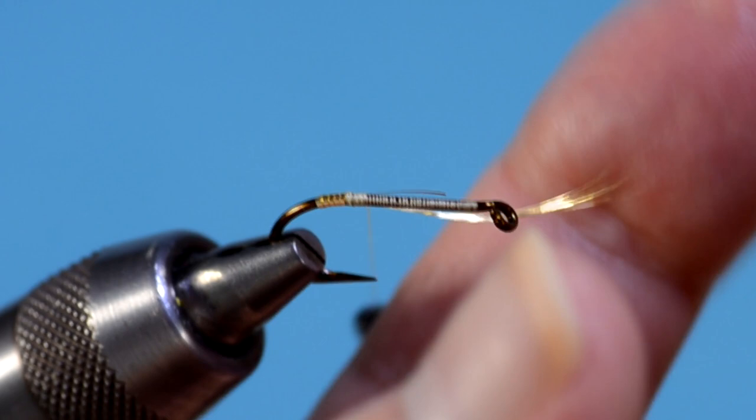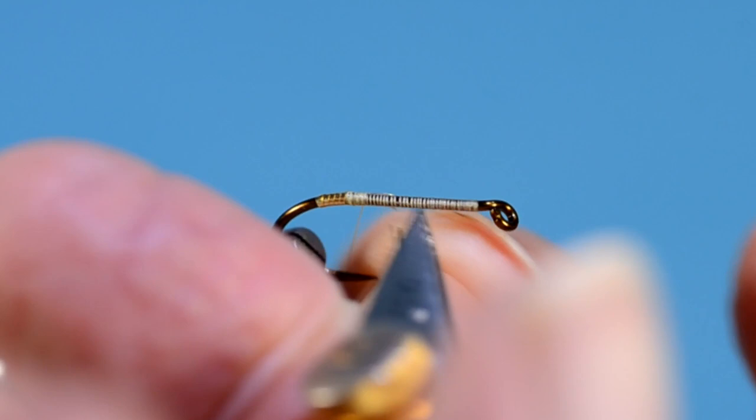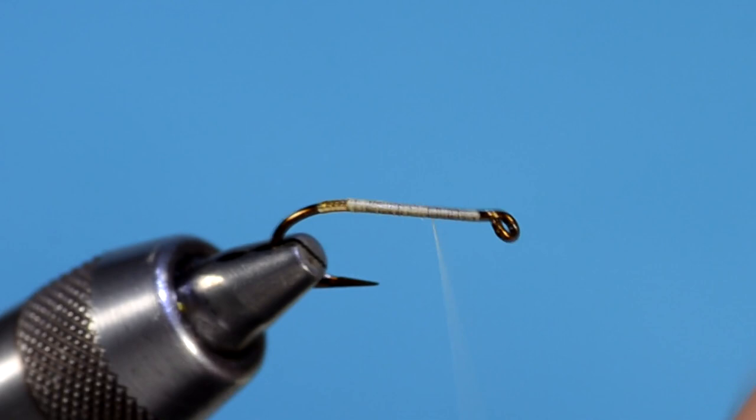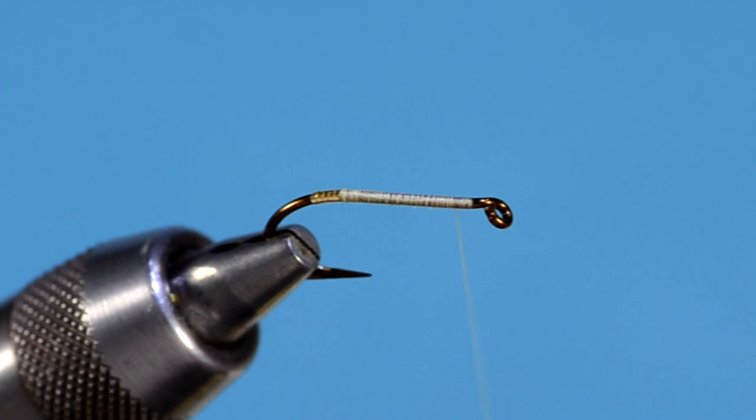If you don't do that, you can wind up with a lot of bulk back there. I like to try to keep a level body by taking the thread all the way forward and all the way back after tying in just about anything.